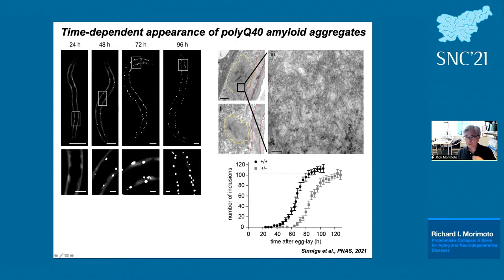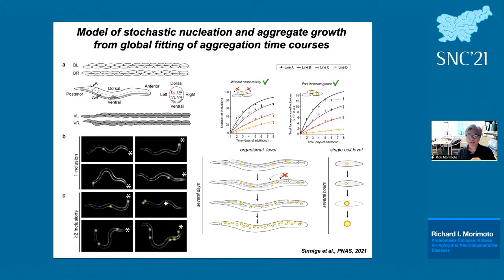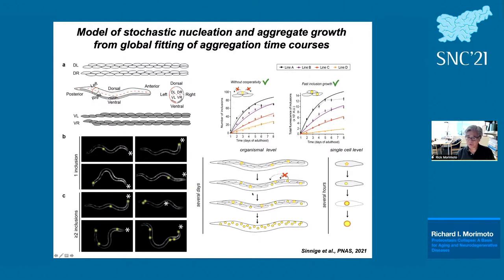Watching the 95 body wall muscles, you can see in yellow the appearance of each aggregate over time. At the molecular level each aggregate formed independently, meaning the animals were functionally autonomous at the organismal level — there was no movement of proteins between cells — and it was simply time-dependent without cooperativity, with fast inclusion growth. This system also allowed us to ask: why is aggregation toxic?